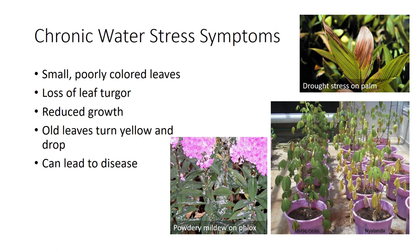Plants suffering from chronic water stress exhibit a variety of symptoms, including small, poorly colored leaves, loss of leaf turgor, and reduced growth. Old leaves often turn yellow and drop off. Some plants show specific symptoms of water stress — for example, the leaves of corn plants curl when they need water, and the leaves of sugar maple trees scorch. Water stress can also dispose plants to other stresses and problems, such as powdery mildew infections in plants like garden phlox when dry soil combines with humid air.